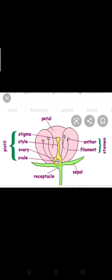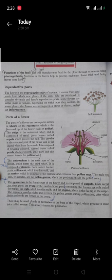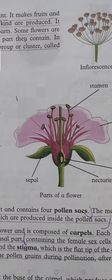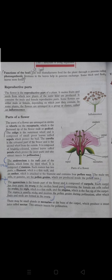The corolla is the colored part of the flower and is the second whorl from the outside. If you have seen a rose flower, there are many whorls. The second whorl is called the corolla, and it is composed of brightly colored, scented leaves called petals. This is the petal, the pink part, which protects the inner parts and also attracts insects for pollination.